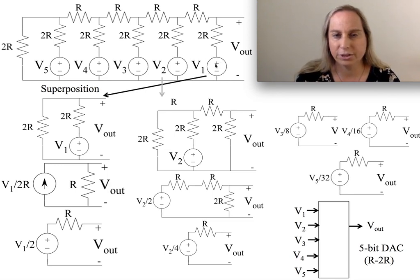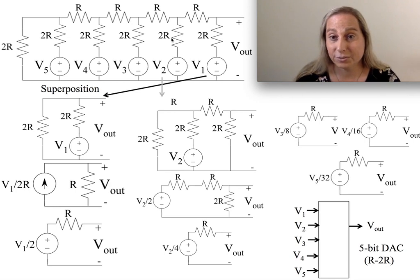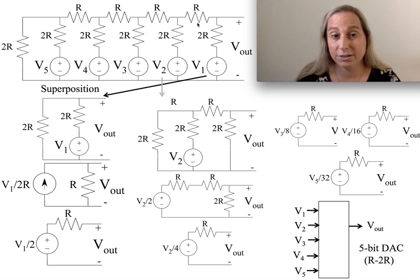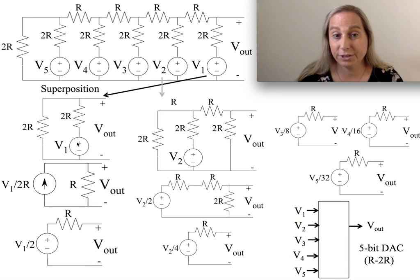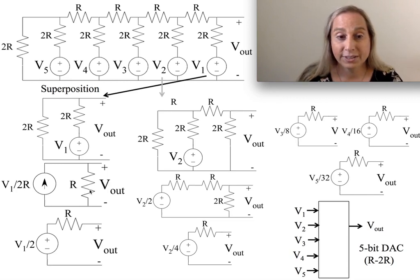Imagine I turn V1 on with all the rest off. One thing I remember from this kind of analysis is that if all the others are off, all those resistors — this R, 2R, 2R, the whole chain — effectively simplifies down to 2R. All of that from over here turns out to be R, and I get another R here, so it's 2R. So my entire circuit is this 2R and this R with V1. I can then make this into its Thevenin equivalent, then Thevenin-to-Norton, which gives me the current source. The two 2R's combine in parallel to give a single R, and transforming back gives me V1/2 with an R.